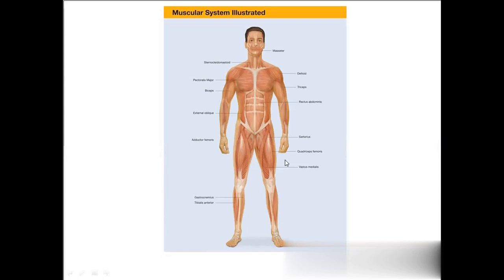And next, this muscle is quadriceps femoris. And this is vastus medialis. And this is gastrocnemius — gastrocnemius is present on the back side of the leg. And this is tibialis anterior, which is present on the front of the leg. These are the major skeletal muscles of our body.